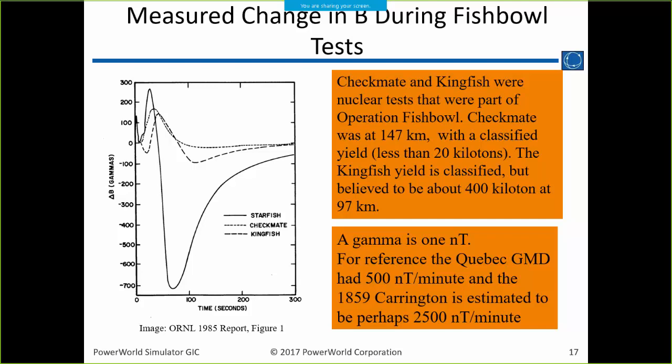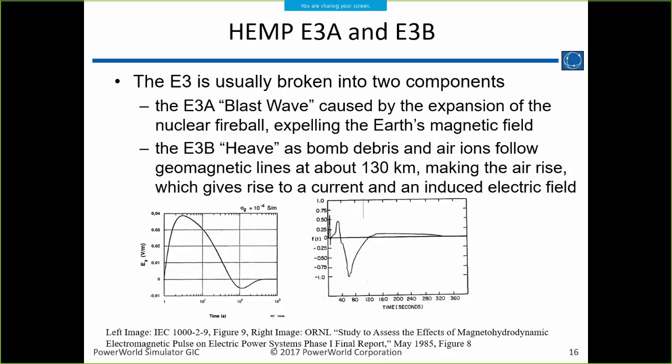A lot of this comes from measurements of the Earth's magnetic field changes from the Fishbowl experiments, showing how B changed as a function of time. When talking about dB/dt during the E3A period, the rate is quite severe — that's how quickly the Earth's magnetic field is changing. We don't care about B itself; we care about the change in B. There's a very rapid slope during E3A, producing big electric fields, followed by a reversal, then recovery.